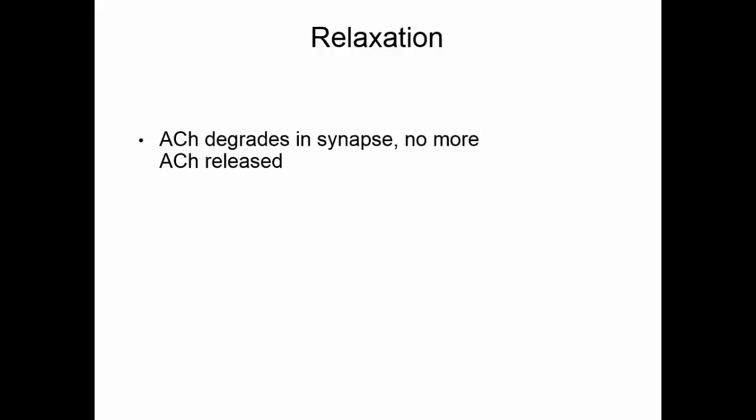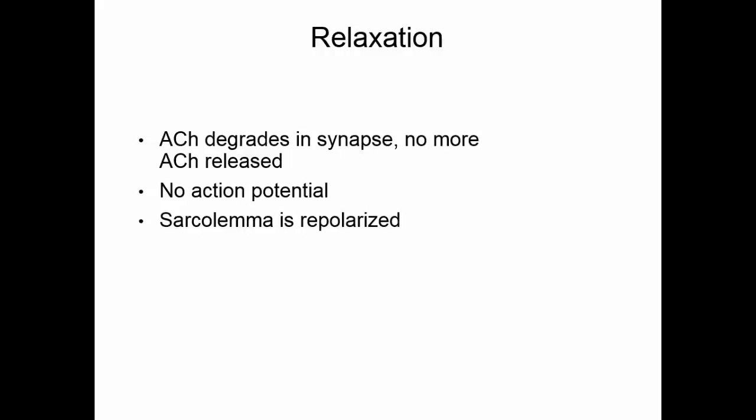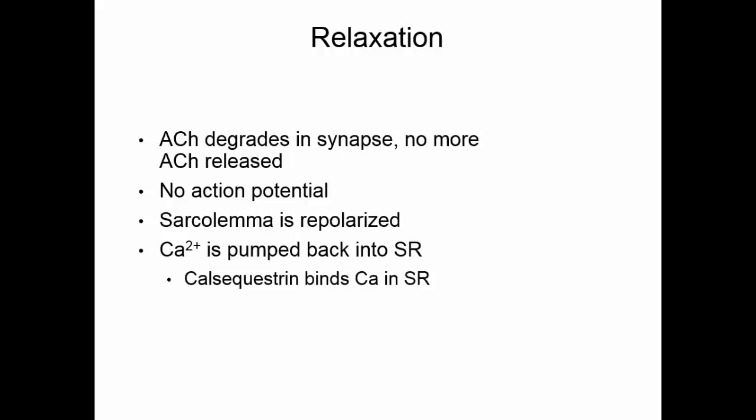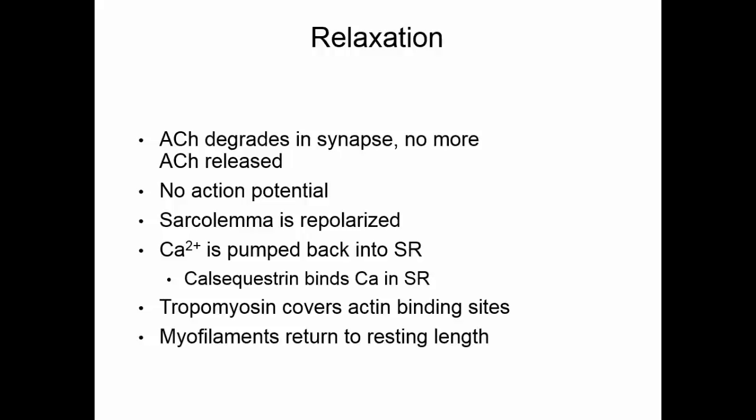Muscle relaxation occurs because we stop getting a signal from the nervous system to contract. The acetylcholine in the synapse degrades fairly quickly and no more is released if there is no more nervous stimulation. Without an action potential on the sarcolemma, the sarcolemma repolarizes completely, and calcium is pumped back into the sarcoplasmic reticulum. Calsequestrin is a protein in the sarcoplasmic reticulum that binds the calcium and keeps it there, away from phosphate in the sarcoplasm. Since there's no calcium on the troponin, the tropomyosin covers the actin binding sites and the myofilaments return to their resting length.